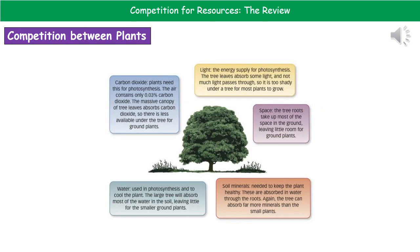If we look at competition between plants, we've said that they need a variety of different things in order to survive and therefore they will compete for those things. Starting with light, the reason our plants need light is because of photosynthesis. If it's too shady then the plant won't get enough light and therefore can't carry out enough photosynthesis, which is why you don't tend to find many plants growing underneath a thick canopy of trees.